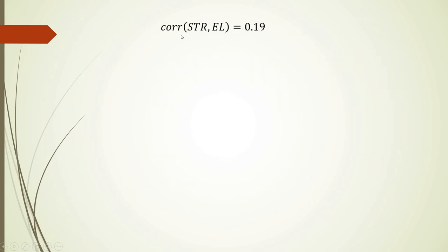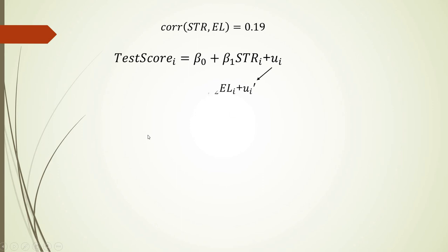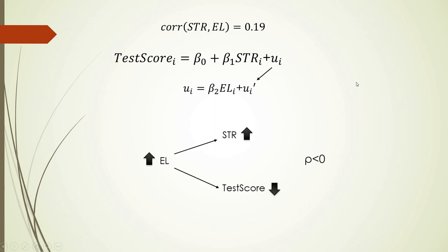In our example, the correlation between student-teacher ratio and percentage of English learners is close to 0.2, and it is included in our error. When the percentage of English learners goes up, student-teacher ratio will go up and test scores will go down. The rho is positive — the correlation between these two variables is positive — so we expect student-teacher ratio to be upward biased if we include English learners in our model.